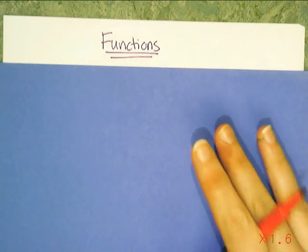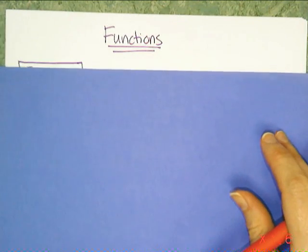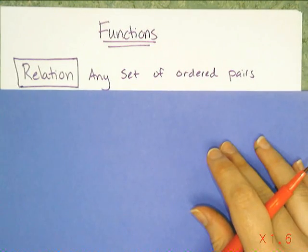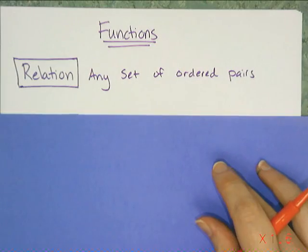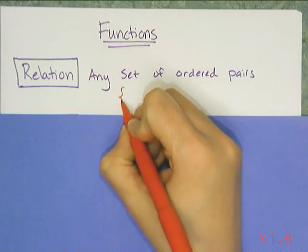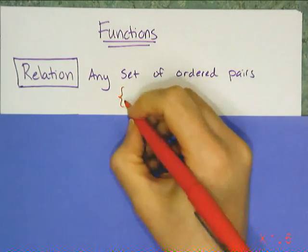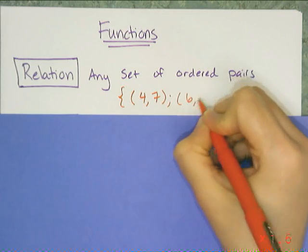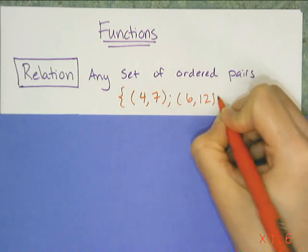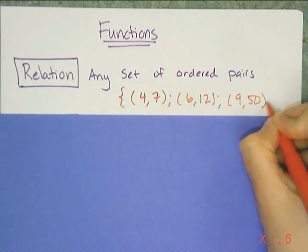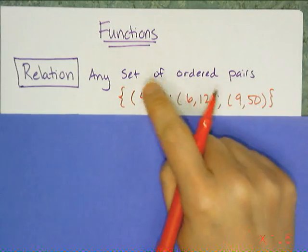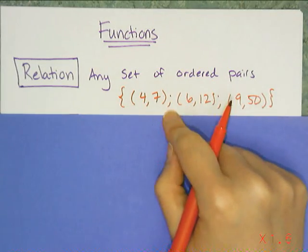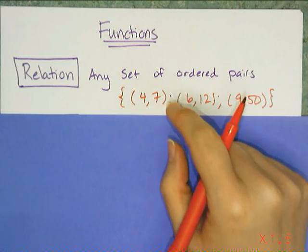In order to define function, I have to define three words first. The first word is relation. In mathematics, a relation is any set of ordered pairs. So I can just randomly come up with a set of ordered pairs — I'll open up my braces to indicate a set of items and list out some ordered pairs, like (4, 7), (6, 12), and (9, 50). These three points make a relation.